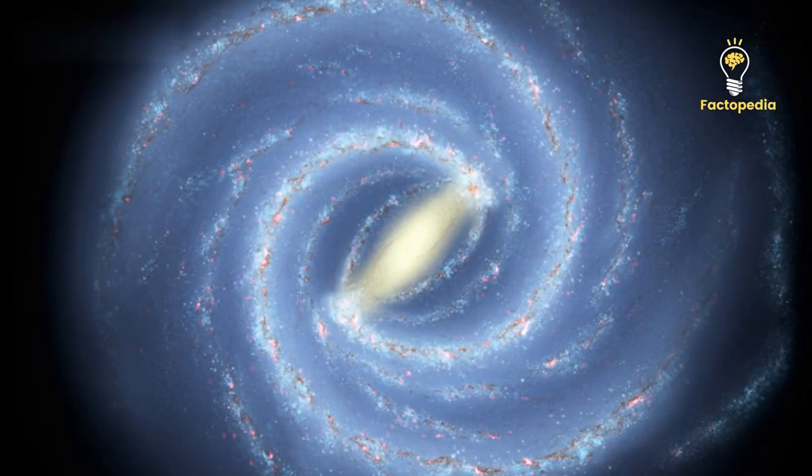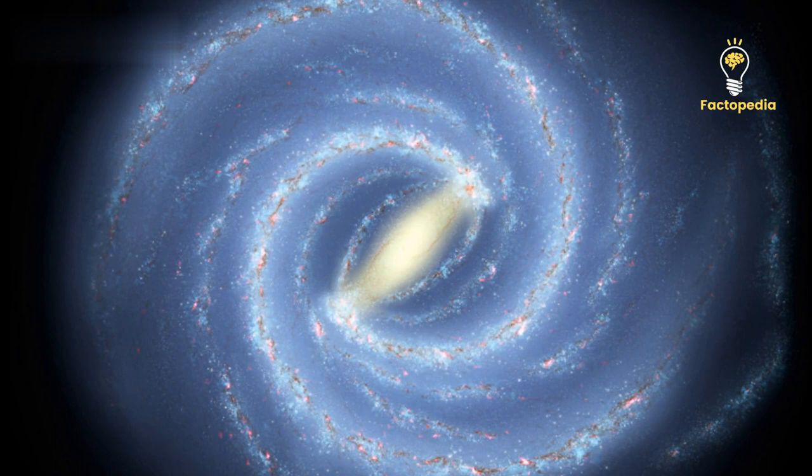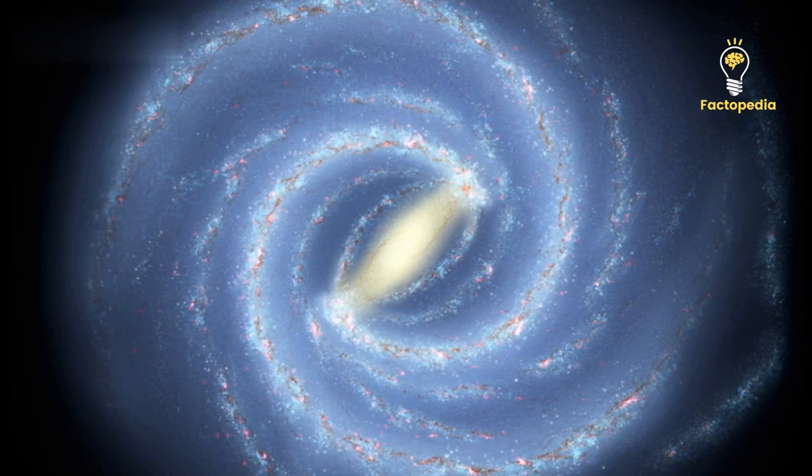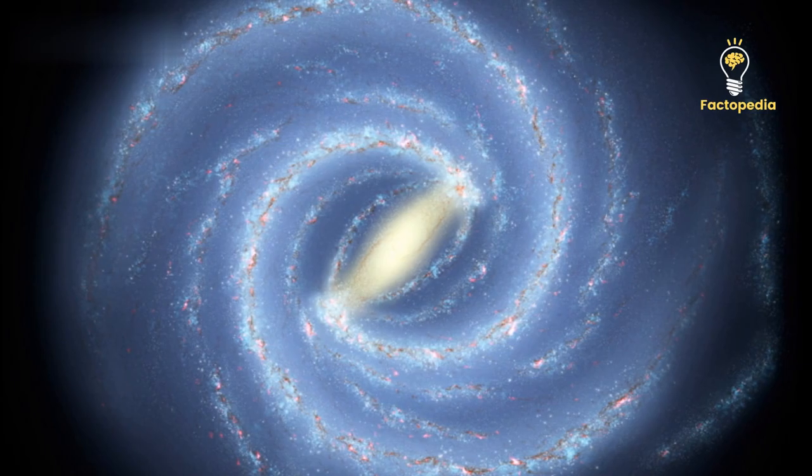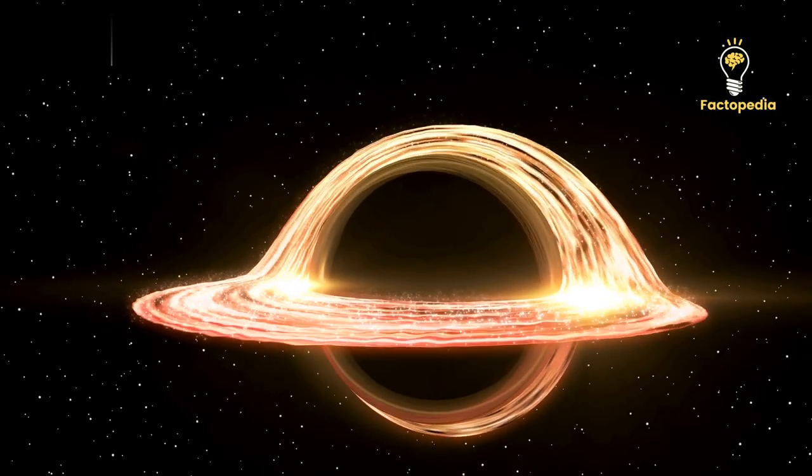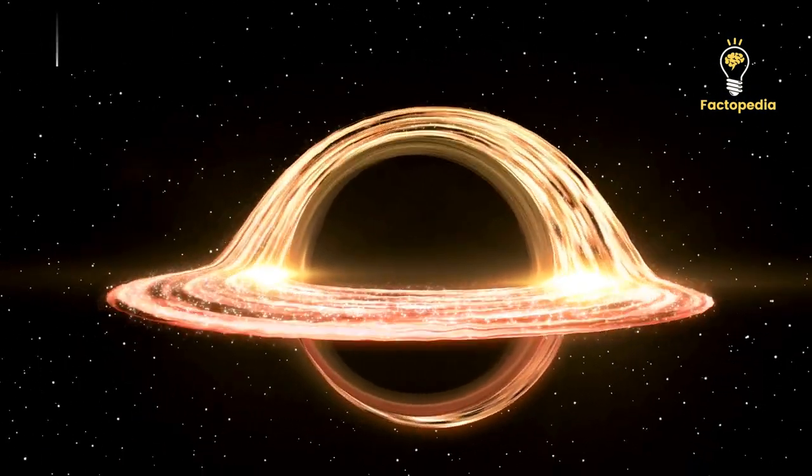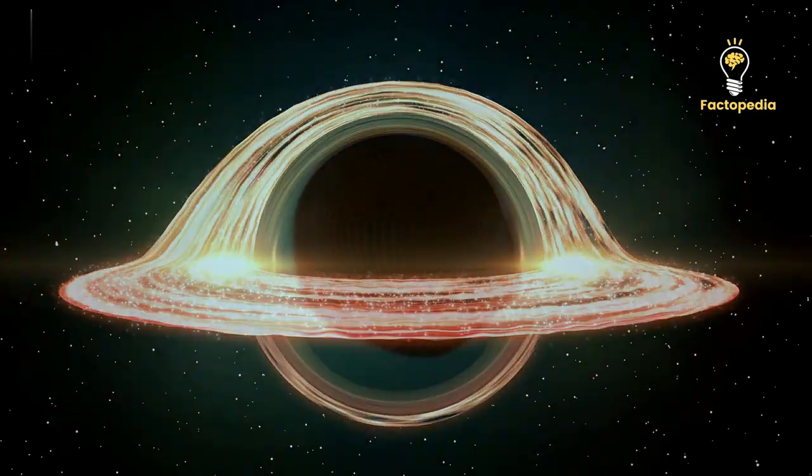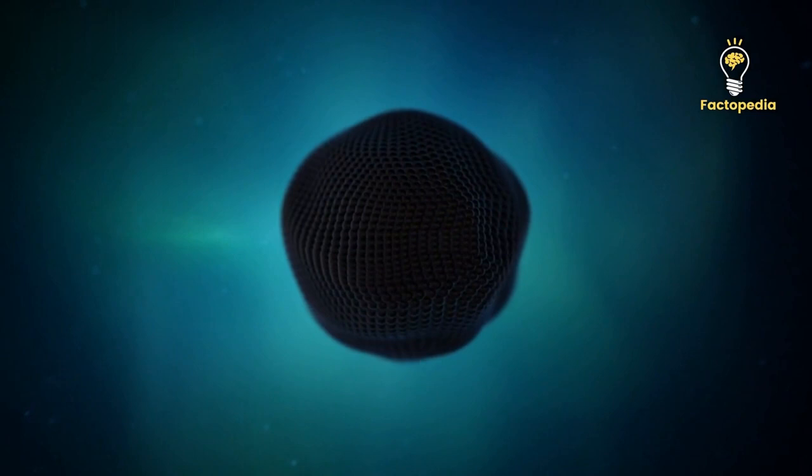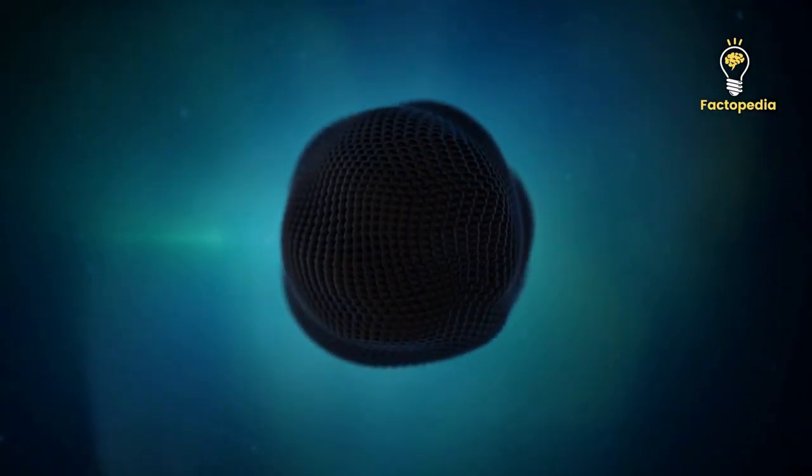These dark stars, residing at the cores of proto-galaxies and fueled by the annihilation of dark matter particles, present a fresh perspective on the celestial stage. Dark stars differ from conventional stars in that their energy is derived from dark matter annihilation rather than nuclear fusion. They consist mainly of ordinary matter like hydrogen and helium, with a trace of dark matter.